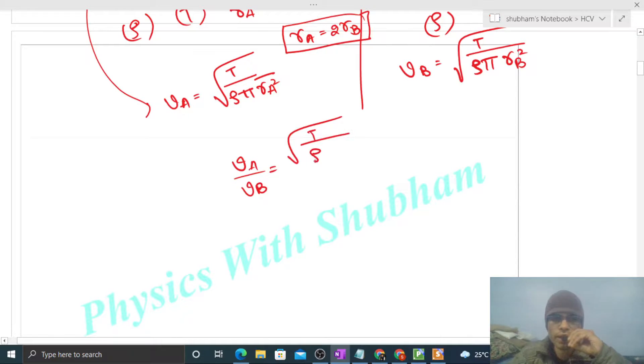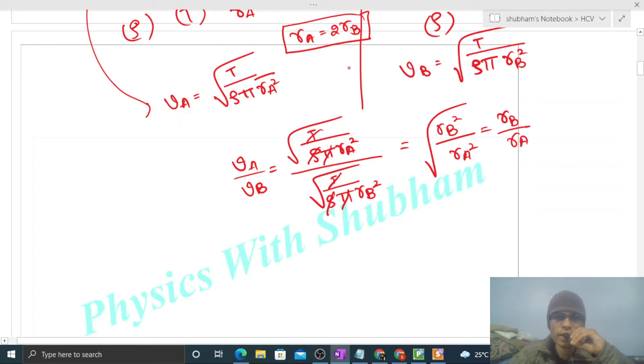That will be square root of T over ρπRA² divided by square root of T over ρπRB². T, density, and π cancel out, giving square root of RB²/RA², which is RB/RA. Since RB/RA equals 1/2, the answer is 1/2.